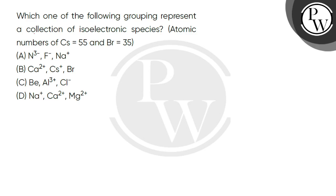Hello students, let's see this question. The question asks which one of the following groupings represents a collection of isoelectronic species. Atomic number of cesium is 55 and bromine is 35. You have to select that option from four options which is a collection of isoelectronic species.